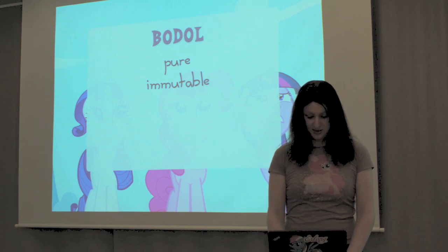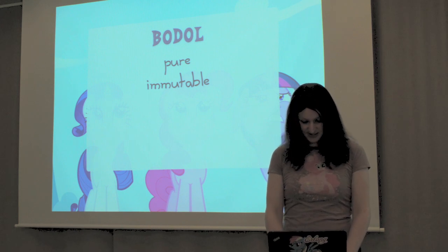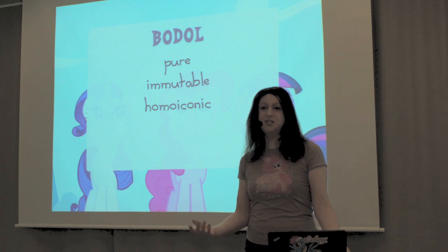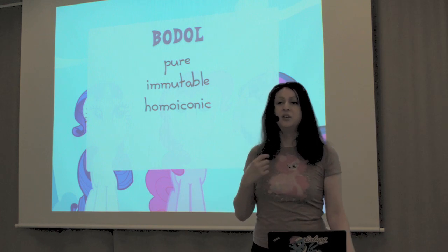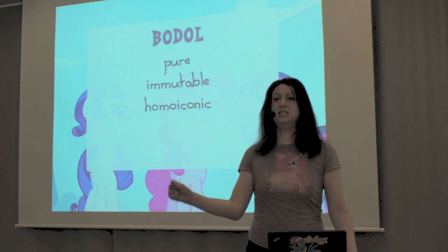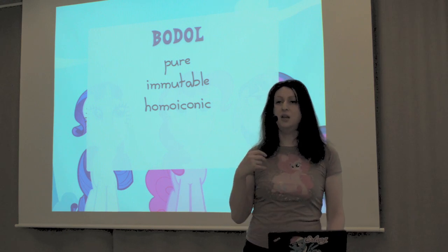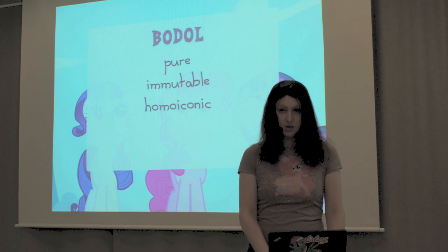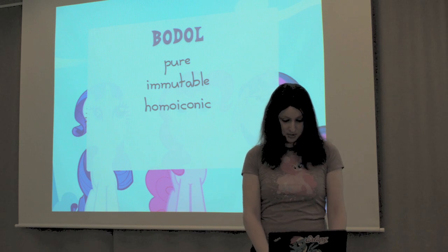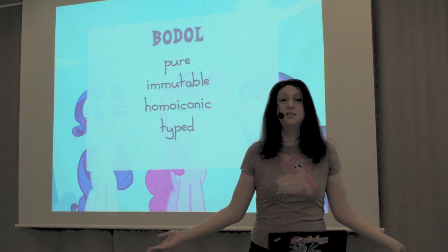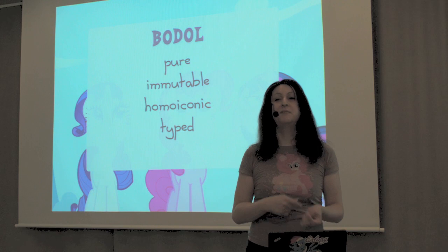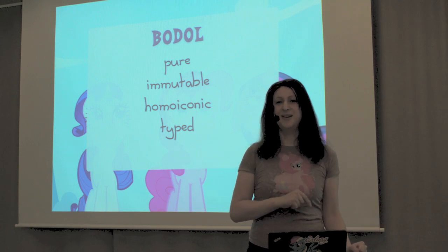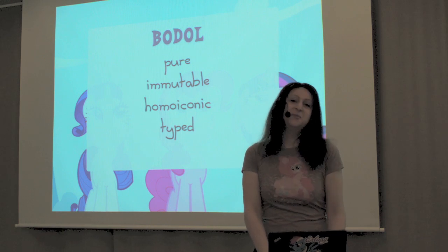Bodol has completely immutable data structures — none of the peculiar nonsense of Shen. It's homoiconic, like a Lisp should be, meaning that the language's syntax is expressed in its own data structures. Any Lisp has the particular feature that Lisp code is just a Lisp list, so you can iterate over the code using the idiomatic functions and control structures, which makes metaprogramming with macros so much easier — it's kind of essential for macros, really. It has a type system, of course. I'm still working on the type system. I essentially wrote Bodol in about a weekend — that was six months ago — and since then I've just been working on the type system. I've realized that types are actually hard, much more so than just writing a toy Lisp.